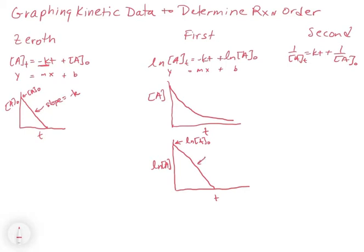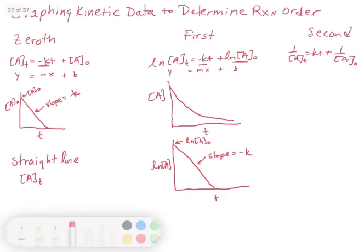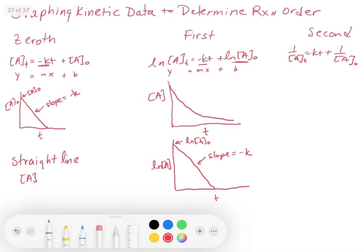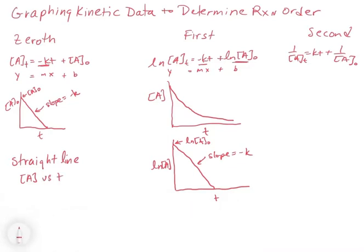The line has a slope equal to minus k. So the y-intercept is ln(A₀) and the slope is minus k. To summarize: for zeroth order, a straight line comes from plotting concentration of A versus t; for first order, you must plot ln(A) versus t to get a straight line.